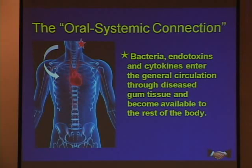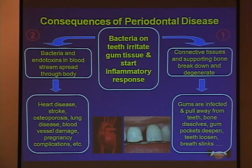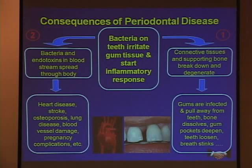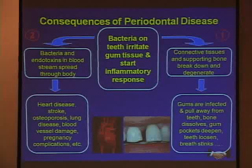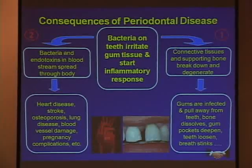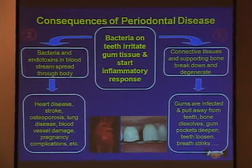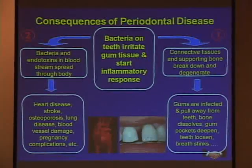It exerts influences on tissues and organs throughout the rest of the body. We already know that on one side we have localized connective tissue destruction and the breakdown that results in periodontal disease, gum disease, or pyorrhea — whatever term we use.